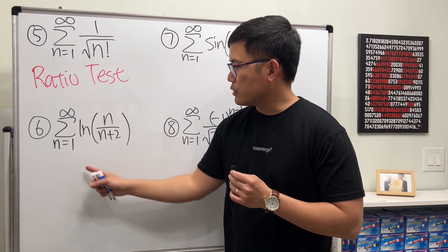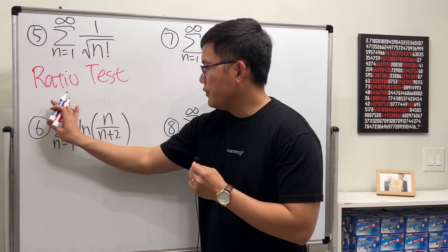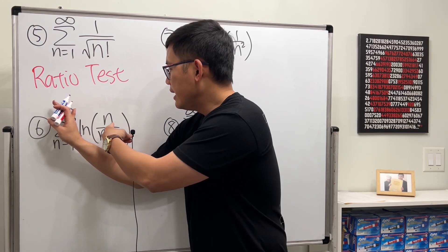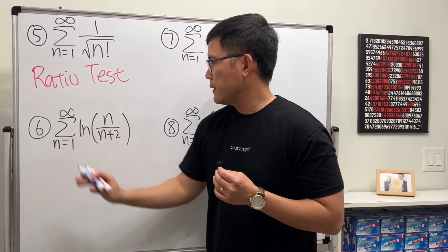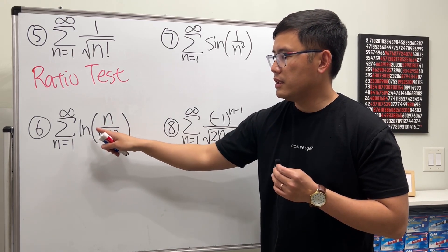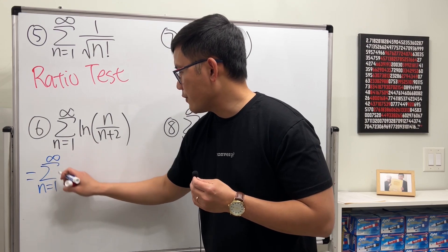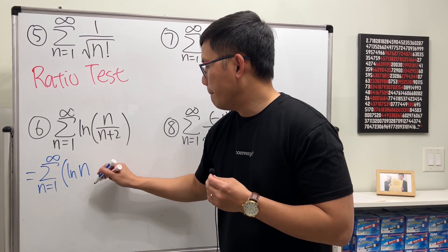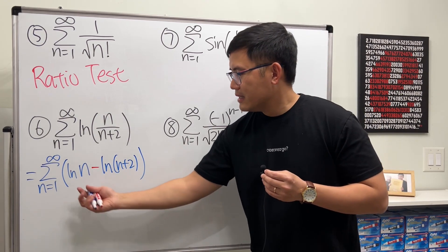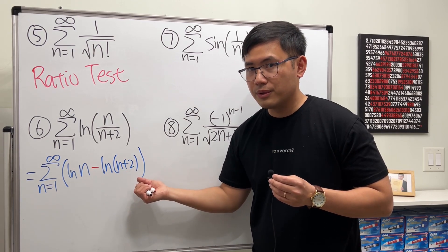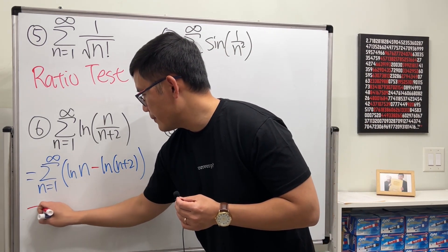Number six: if you try the test for divergence by taking the limit of n/(n+2) as n → ∞, you get 1, and ln(1) = 0, so that test fails. However, we can use the log property to break it apart: the series becomes the sum of ln(n) − ln(n+2). The input is just off by two and subtracting, so this is a telescoping series — try the telescoping method and check if the partial sum converges.